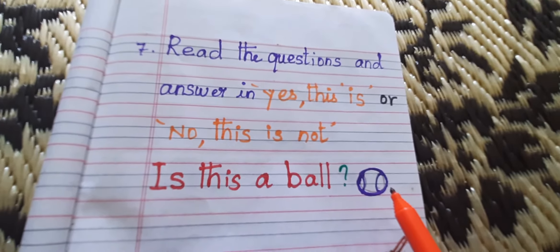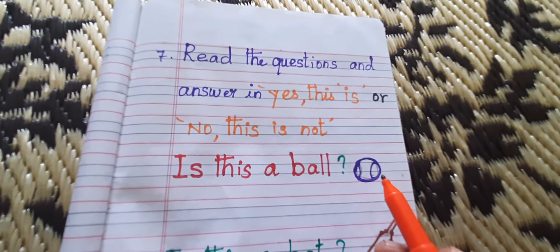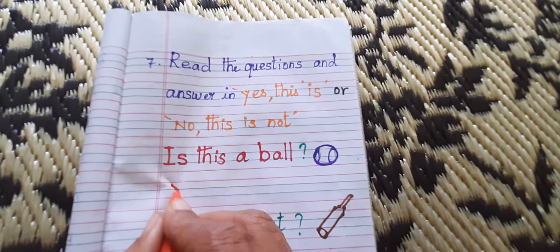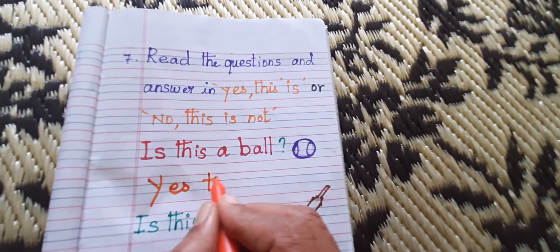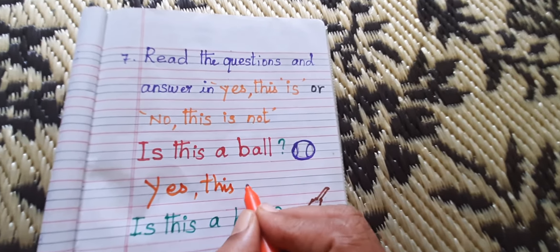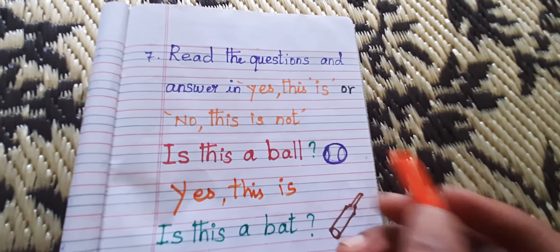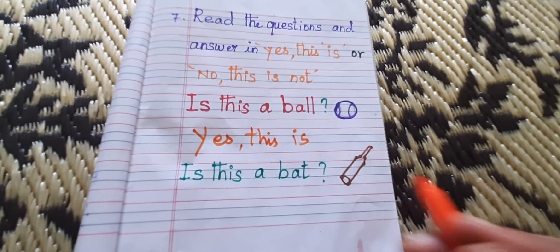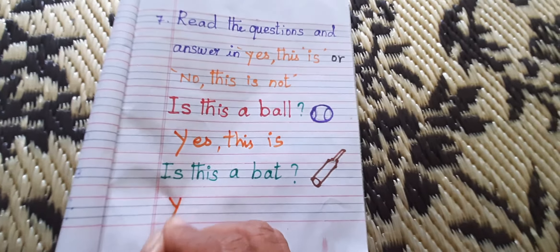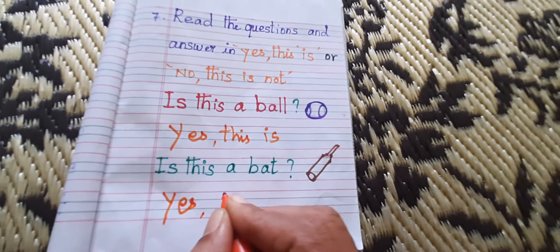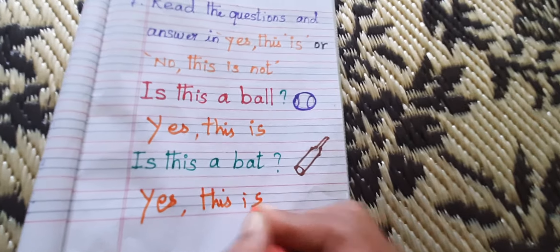What is this? Ball. Is this a ball? Yes. Is this a ball? Yes. This is a ball. Next. Is this a bat? Yes. Yes. This is a bat.